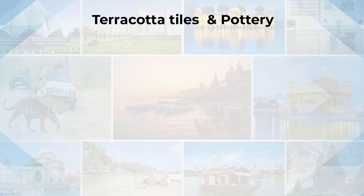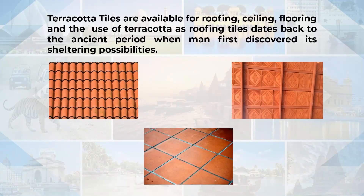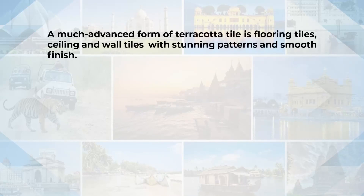Now let's talk about terracotta tiles and pottery. Terracotta means baked earth. It is an impure form of kalonite, buff or brown in color, and on baking it transforms into different shades of ochre and orange. This hard semi-fired waterproof clay is used in making pottery, tiles, statues and other artifacts. Terracotta tiles are available for roofing, ceiling and flooring, and their use as roofing tiles dates back to ancient times. The more advanced form includes flooring tiles, ceiling and wall tiles, which come in unique patterns and stunning finishes.